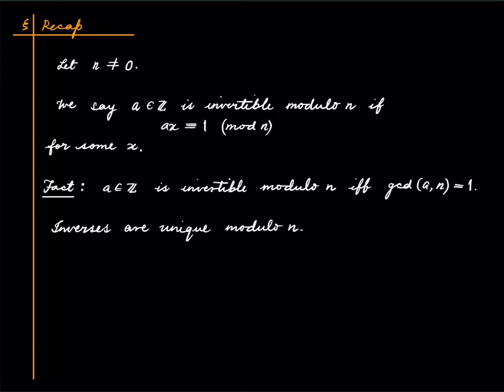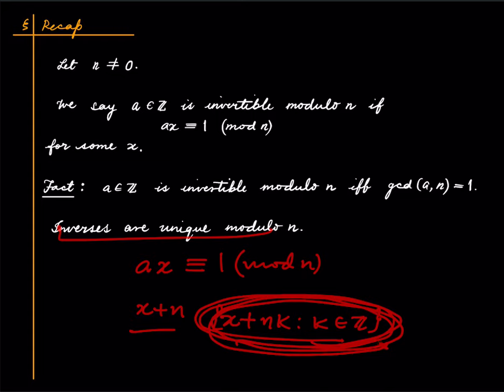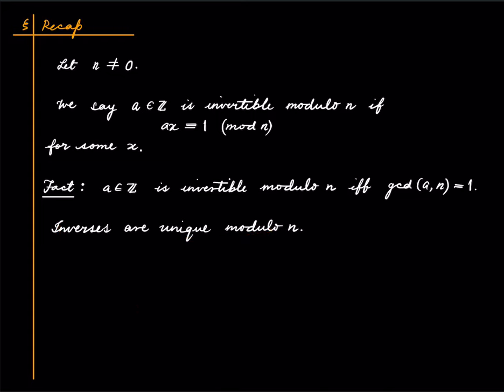And we saw that inverses are unique modulo n. What that means is that suppose a is an integer and x is an inverse of a modulo n, then of course x plus n will also be, and in fact everything in this congruence class will also be an inverse of a modulo n. What this means is that these are the only things that are inverses of a modulo n. So once you have found an inverse, you know every other inverse.